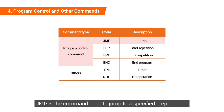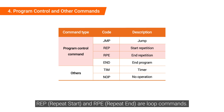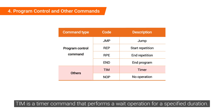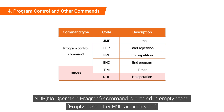JMP is the command used to jump to a specified step number. REP and RP are loop commands. EMD is the program termination command and must be entered at the end of the program. TIM is a timer command that performs a WAIT operation for a specified duration. NOP command is entered in empty steps.